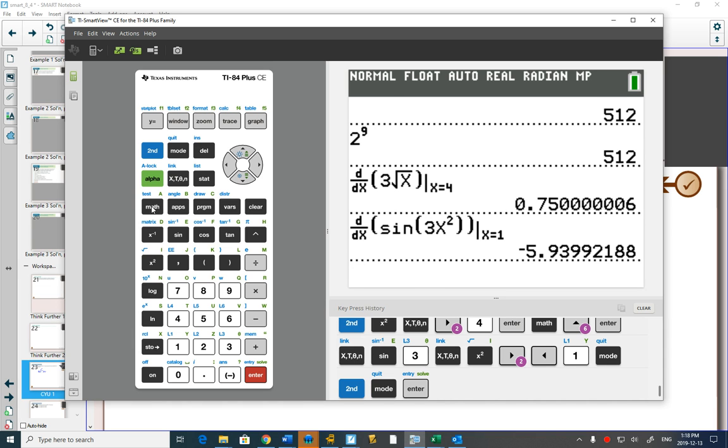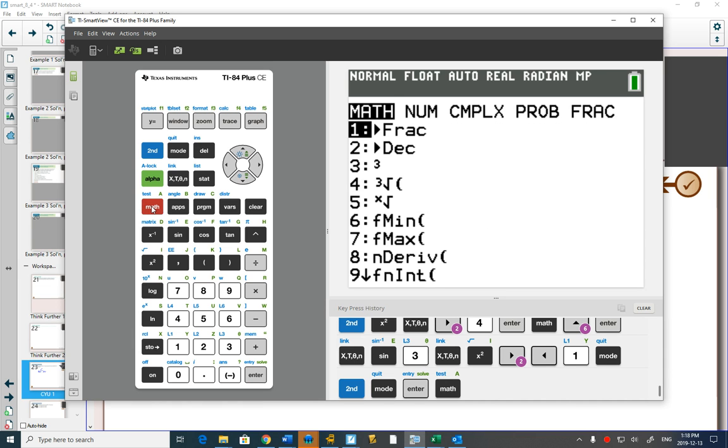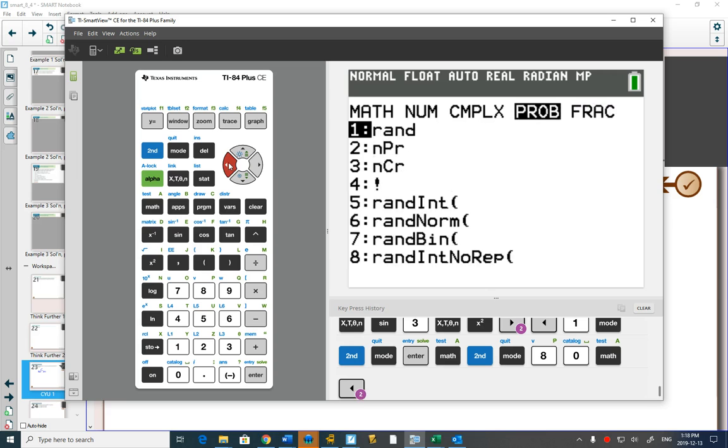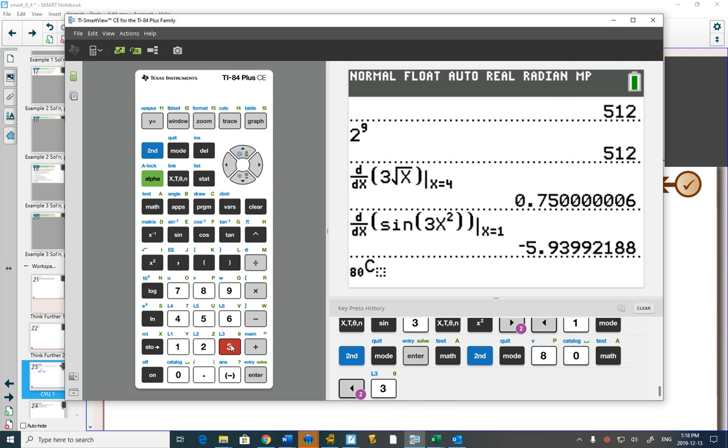And this is on your calculator. So on my calculator, I go to math and then over to probability. First I think on mine, I have to type in 80. Then go over to probability, nCr.